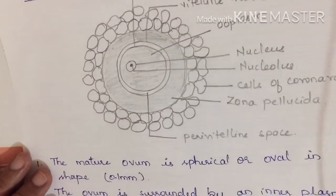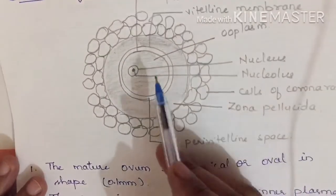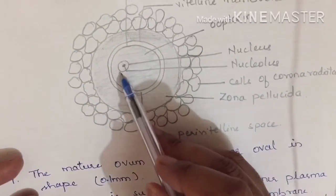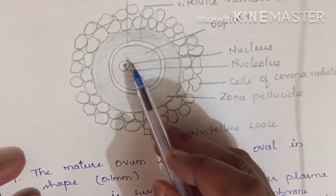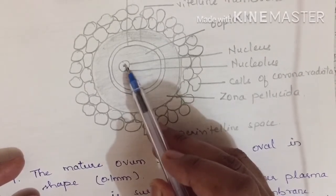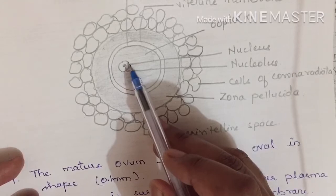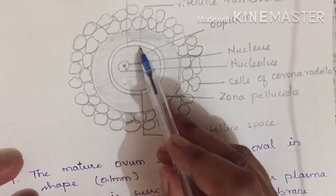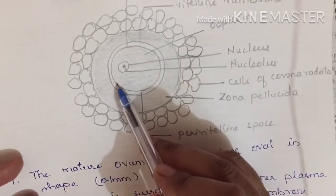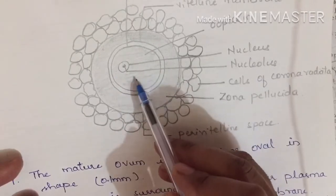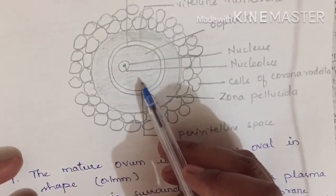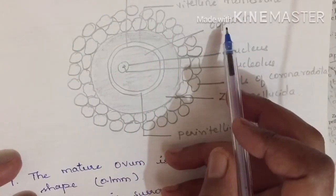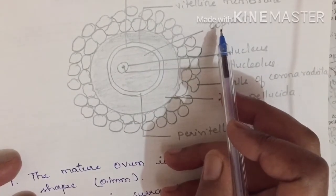The egg or ovum consists of a nucleus, and since the egg is a single cell, it also consists of a nucleolus. It is covered by the plasma membrane — the innermost layer. Inner to the plasma membrane it consists of cytoplasm, just as a normal cell does, but here the cytoplasm is called ooplasm.